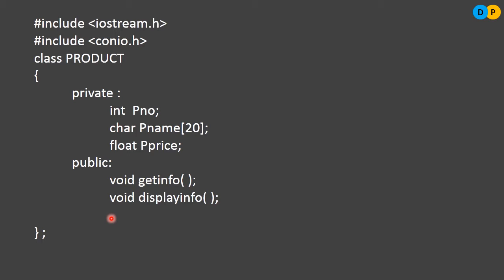Here you can notice there is a change. Get info and display info member functions are just declared within the class. As you can notice, each statement is terminated by a semicolon, which means they are just declared, not completely defined. We are not revealing what the function will be performing or the actual work. The definition of these member functions will be done outside the class. After declaring the data members and member functions, we have also terminated the class by putting a semicolon.